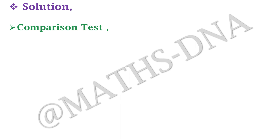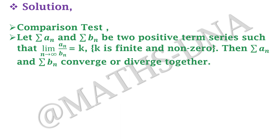The first is the comparison test. Let aₙ and bₙ be two positive-term series such that limit as n tends to infinity of aₙ/bₙ equals some number k, where k is finite and nonzero. Then summation aₙ and summation bₙ converge or diverge together.